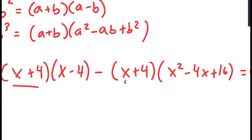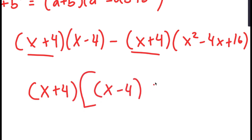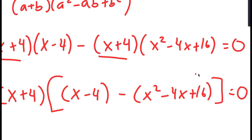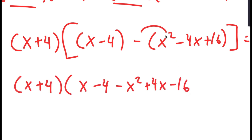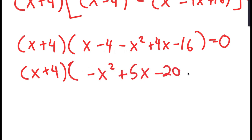Because both terms have x plus 4 in them, I can factor out x plus 4. So I get x plus 4 times the quantity x minus 4 minus the quantity x squared minus 4x plus 16, equals 0. Distributing the negative sign, this becomes x plus 4 times negative x squared plus 5x minus 20 is equal to 0.